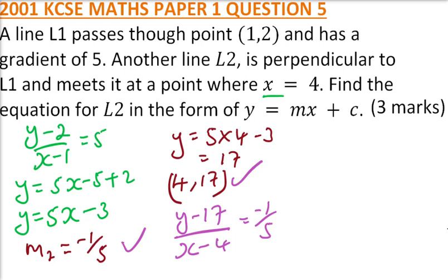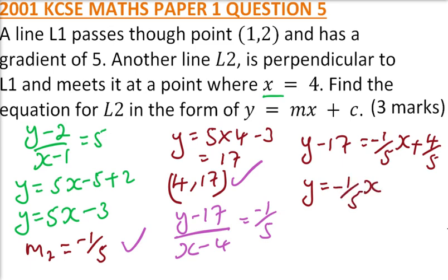So, we cross multiply, we will say y minus 17 is equal to minus 1 over 5x plus 4 over 5, which you get y equals minus 1 over 5x. Now, that will give us plus 89 over 5. That is, you take 17 to the other side which is in form of y equals mx plus c. So, that is how you work it out.